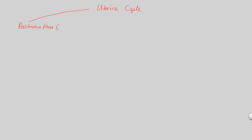The proliferative phase runs from days 6 through 13. This lines up and matches with the follicular phase. This is going to be considered a coordinated event — coordinated with the follicular phase, which went from days 1 through 13 of the ovarian cycle. So 6 through 13 overlaps with 1 through 13, and we have this coordination at that phase.